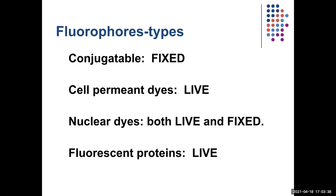Nuclear dyes come in both varieties — some are for live specimens, some for fixed specimens. Fluorescent proteins are what really gave a boost to live imaging because they're easy to use, they don't affect the cells, they're not toxic at all, and there are so many colors available. They spawned a revolution in imaging, which is why fluorescence imaging is the number two most used tool in biology today.